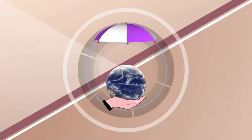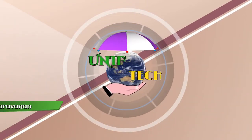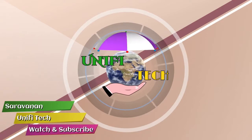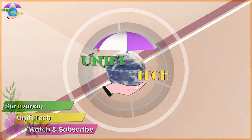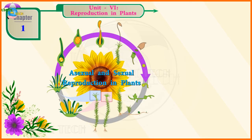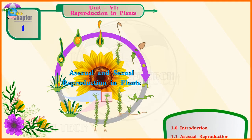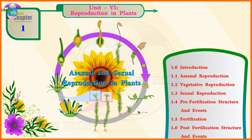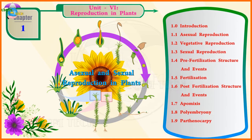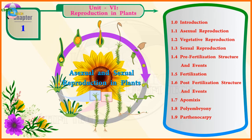Hi friends, I am your Saravanan. This is your Unified Tech. Let's go to the video. Chapter 1, Unit 6 — Reproduction in Plants: Asexual and Sexual Reproduction in Plants.